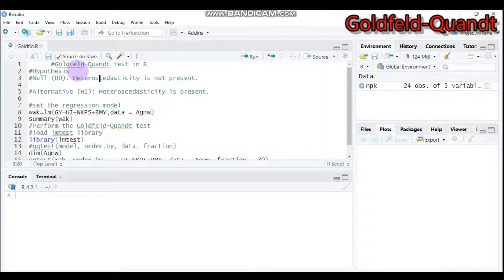The Goldfeld-Quandt test helps to check whether heteroscedasticity is present or absent in our regression model. This test works by removing some number of observations that are located in the center of our dataset, then testing to see if the spread of the residuals is different from the resulting two data sets that are on the other side of the central observation.